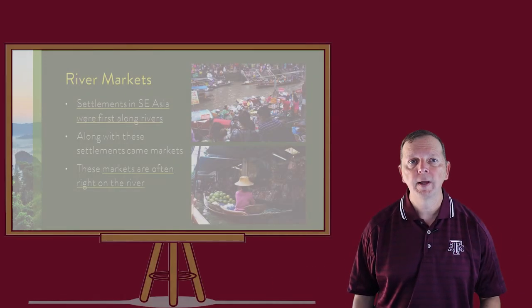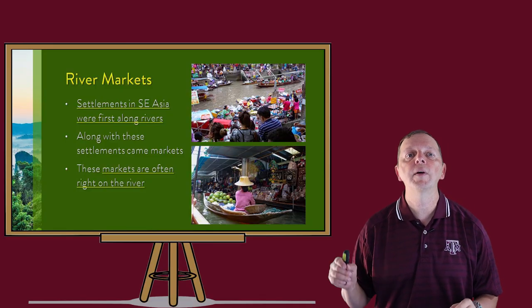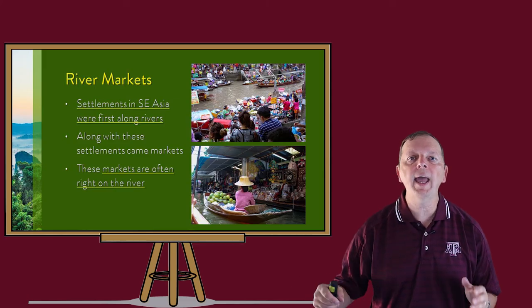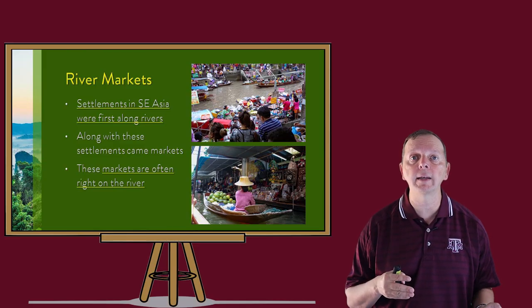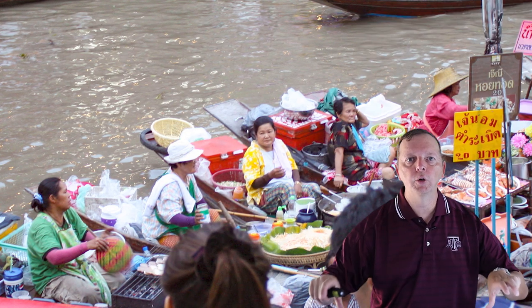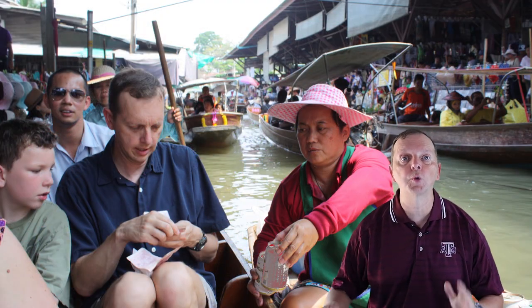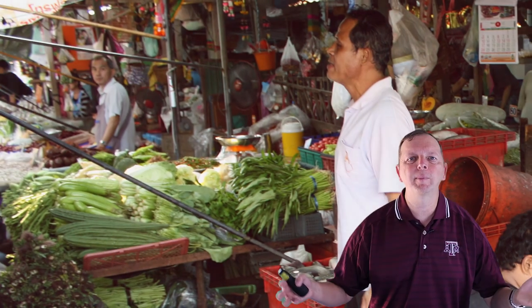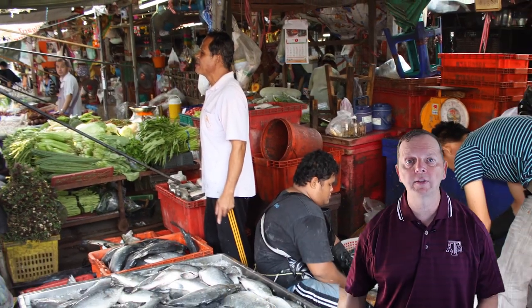Then there are the river markets. The people of Southeast Asia first settled along the rivers, and rivers not only became ways to transport goods — they actually became the markets themselves. In 2012, my family and I visited Thailand and the Amphawa River Market, which is shown here. Not only can you buy goods on the banks of the river, many Thais will actually travel to the market by boat and purchase their goods right on the river.